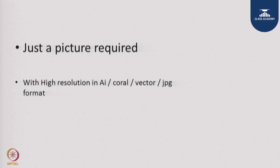These are some images of facades on which this technology has already been used. What is required is simply a high resolution photograph in any format — AI, coral vector, or JPG — to get printed with this technology on the facade.